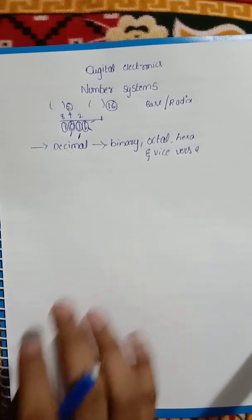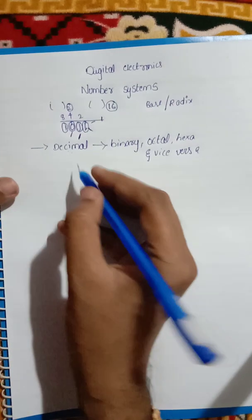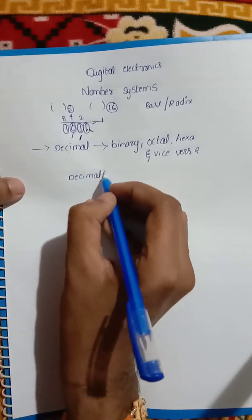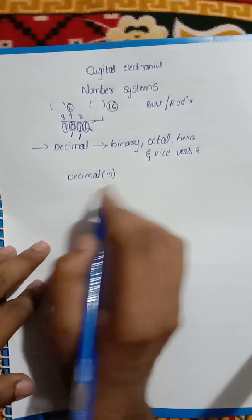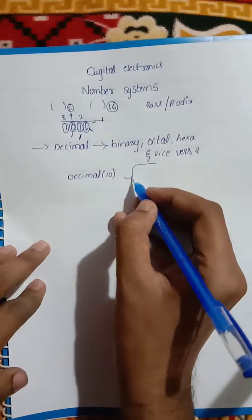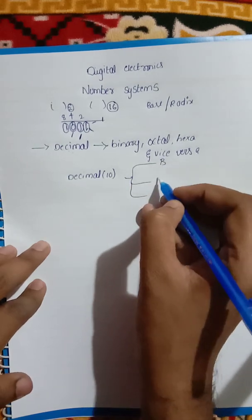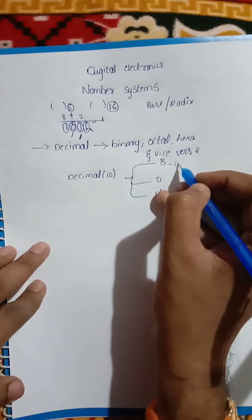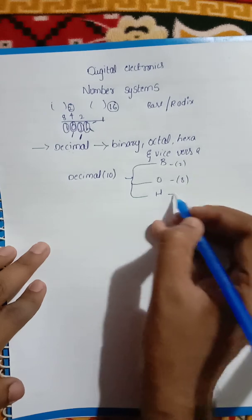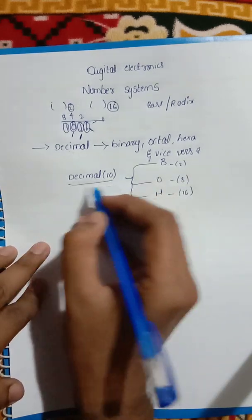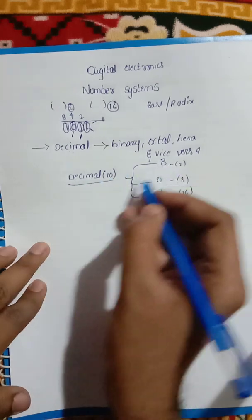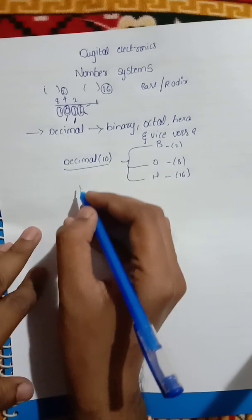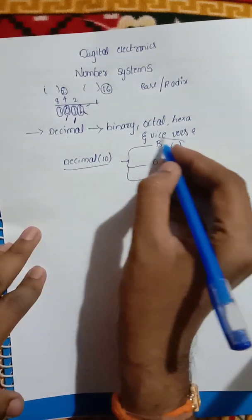I am going to talk about the conversions. If you have a decimal number system, its base is 10. You have binary with base 2, octal with base 8, and hexadecimal with base 16. Whenever you are trying to convert a decimal number to binary, octal, or hexadecimal, simply divide that decimal number by the particular base.